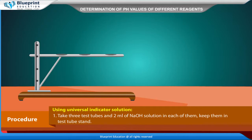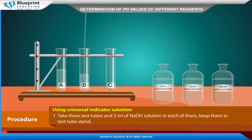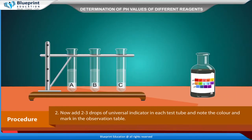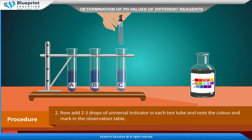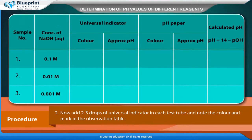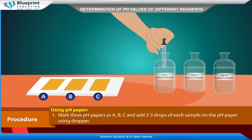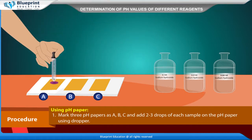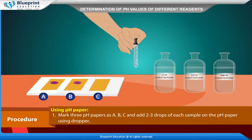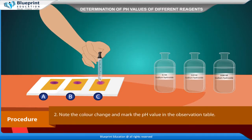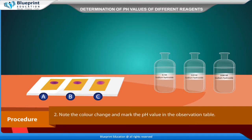Procedure — using universal indicator solution: Take 3 test tubes with 2 ml of NaOH solution in each and keep them in the test tube stand. Add 2–3 drops of universal indicator in each test tube and note the color, recording it in the observation table. Using pH paper: mark 3 pH papers as A, B, C and add 2–3 drops of each sample onto the pH paper using a dropper. Note the color change and mark the pH value in the observation table.